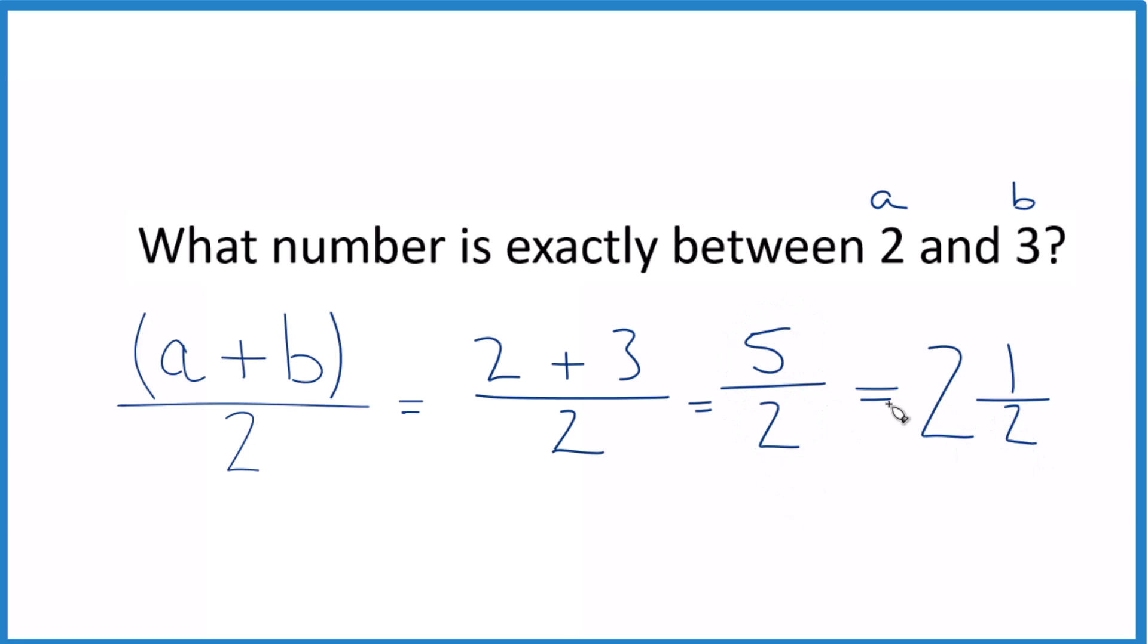So 5 halves and 2 and 1 half, they're the same value. They're equivalent. So that's it. That's how you find out what number is exactly between 2 and 3. The answer, 5 halves or 2 and 1 half. This is Dr. B. Thanks for watching.